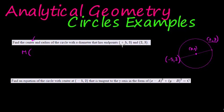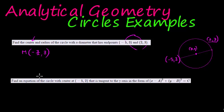We need the midpoint formula, which is basically the average of the x-values and the average of the y-values. The average between negative five and two: negative five plus two is negative three, divided by two is negative three over two, which is negative one and a half. The average between three and three is three, so three plus three is six divided by two is three. So there is my center.